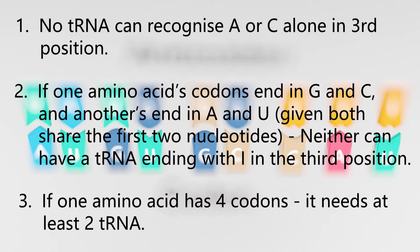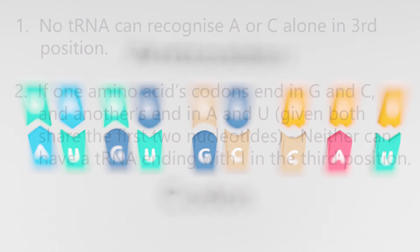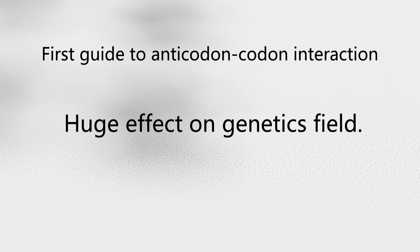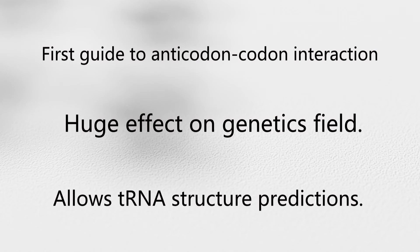As the first comprehensive guide to third position anticodon-codon interaction, the wobble hypothesis has had a profound effect on the entire field of genetics, and continues to allow predictions of the number and structure of possible tRNAs in organisms.